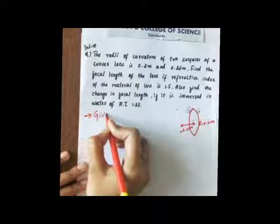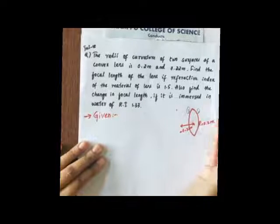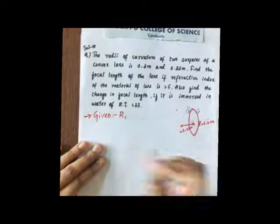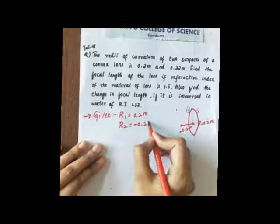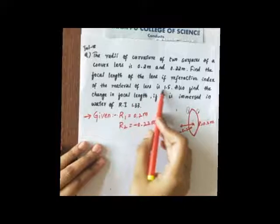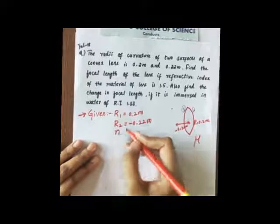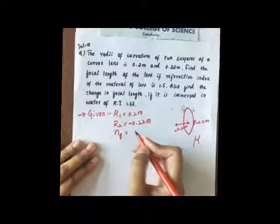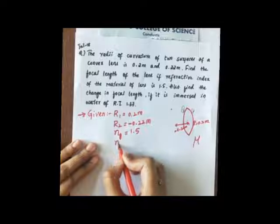Writing the given quantities: radius of curvature of the first surface, R1 = +0.2 meter (positive by sign convention). For the second surface, R2 = −0.22 meter (negative by sign convention). Refractive index of glass, NG = 1.5 — the lens is made of glass. Refractive index of water, NW = 1.33. We need to find the focal length in air and in water, then find the difference.